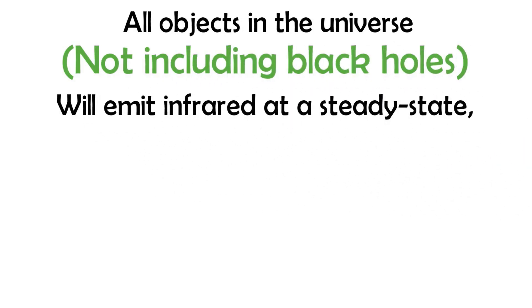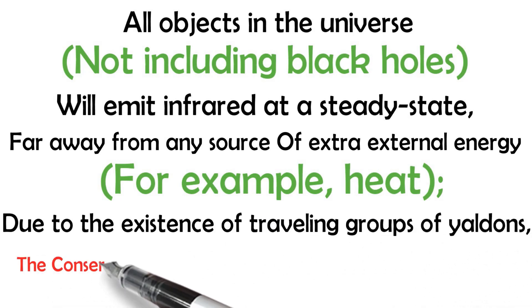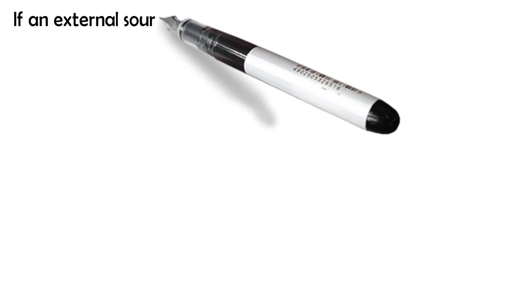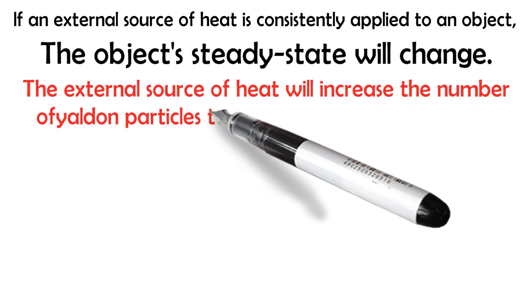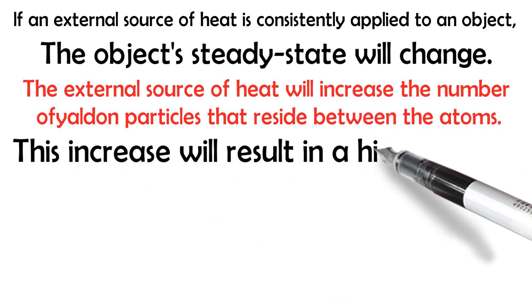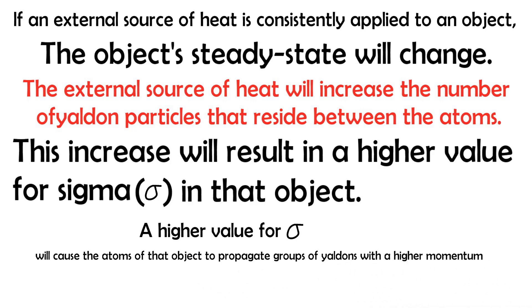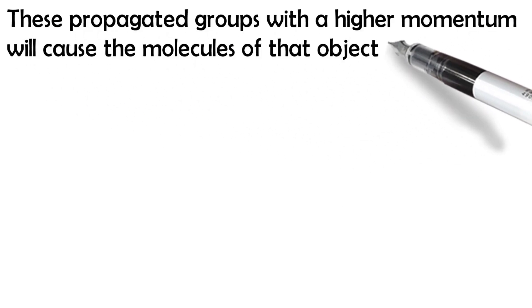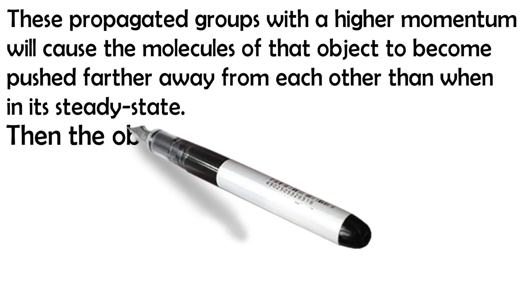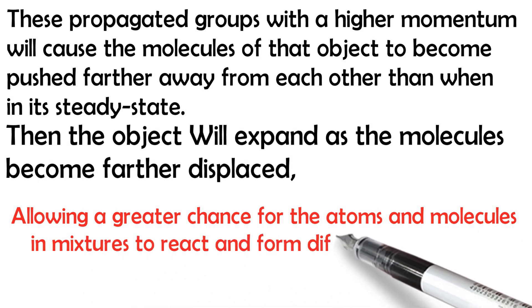All objects in the universe, not including black holes, will emit infrared at a steady state far away from any source of extra external energy, due to the existence of traveling groups of Yaldons, the conservation of momentum, and simple harmonic motion. If an external source of heat is consistently applied to an object, the object's steady rate will change. The external source of heat will increase the number of Yaldon particles that reside between the atoms, resulting in a higher value for sigma. This will cause the atoms to propagate groups of Yaldons with higher momentum — increased temperature — pushing molecules further apart, and the object will expand.